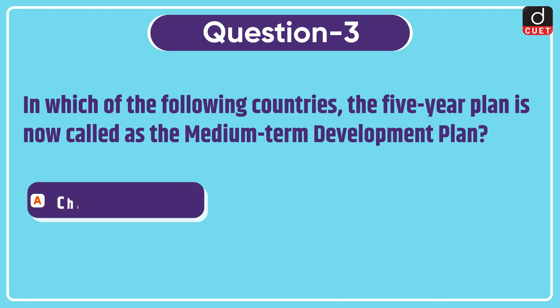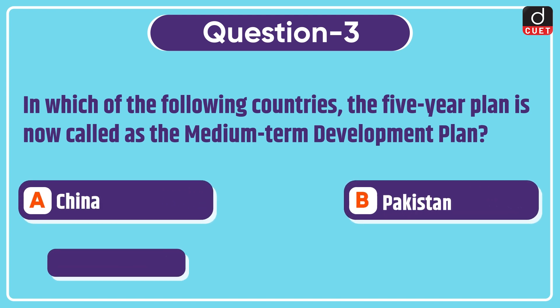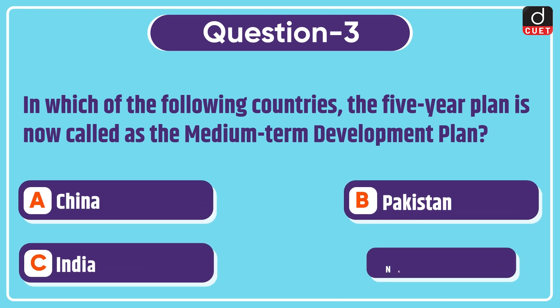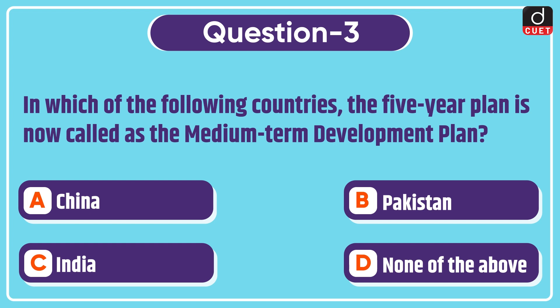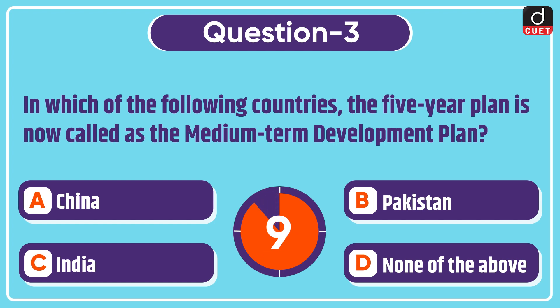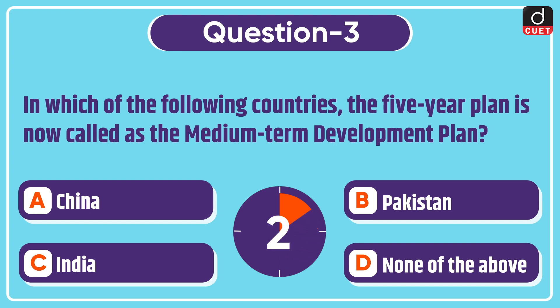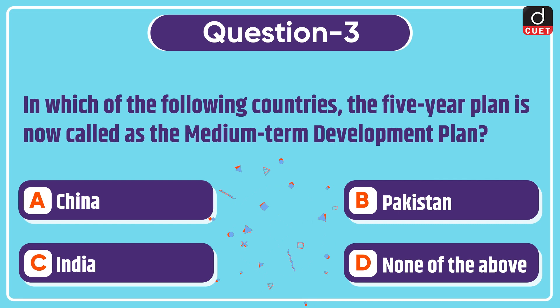Next question: in which of the following countries is the five-year plan now called the medium-term development plan? China, Pakistan, India, or none of the above? The correct answer is option B, Pakistan.